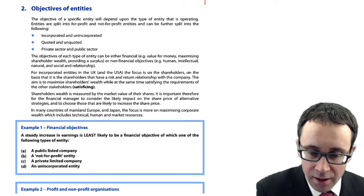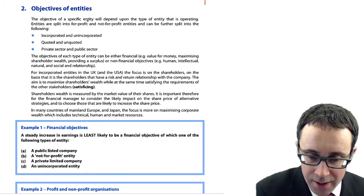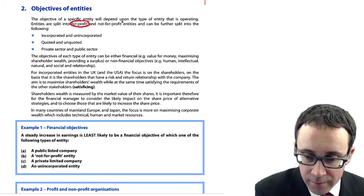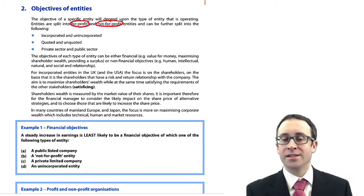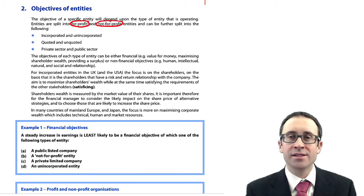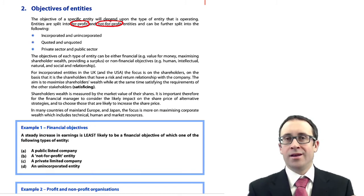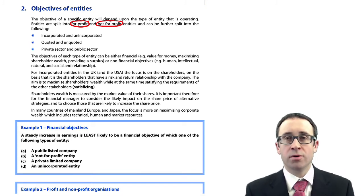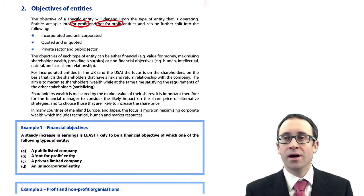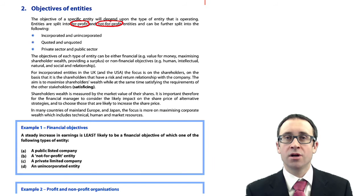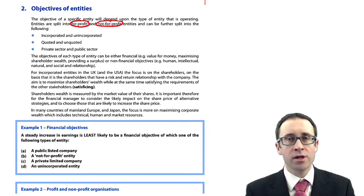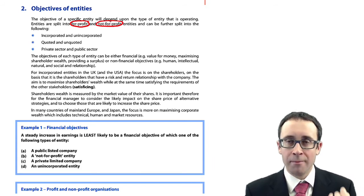What we consider are two types of entity: for-profit and not-for-profit entities. For-profit entities — clearly the aim there is to make as much profit as possible. Thinking about the likes of Apple, Coca-Cola, Mars — any of those businesses are all about making as much money as possible for the shareholders from the profits that are made.